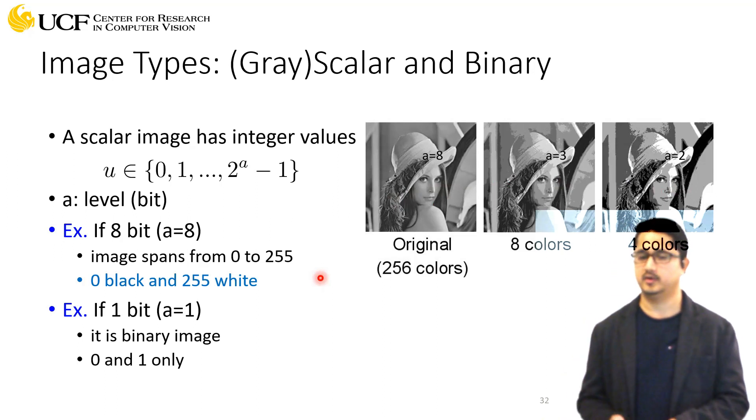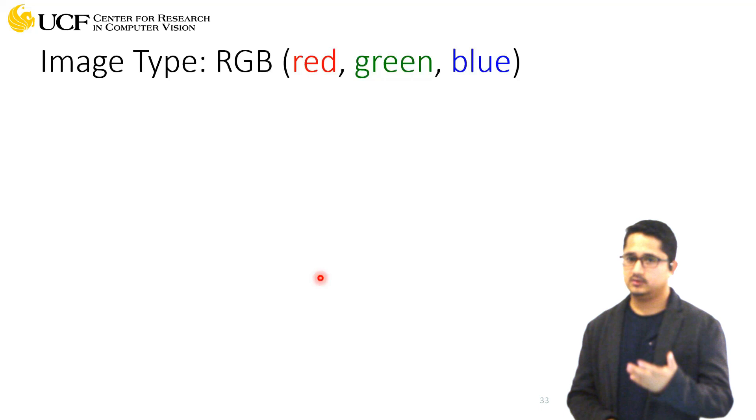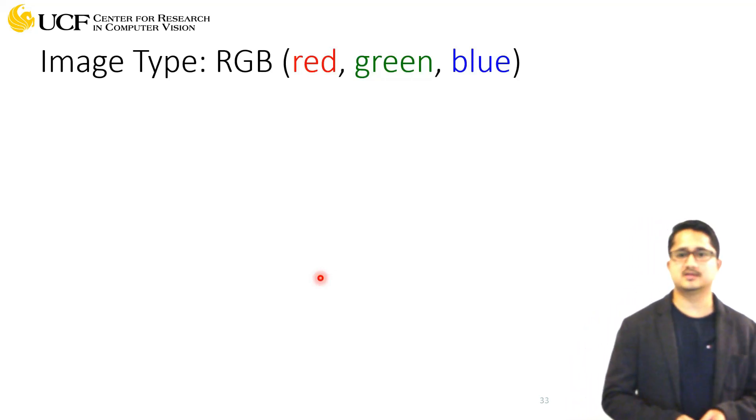Why do we need these different bit levels if higher bit level is better? Of course we always want higher bit level, but that comes with memory consumption. Bit level eight requires much more memory compared to bit level two.